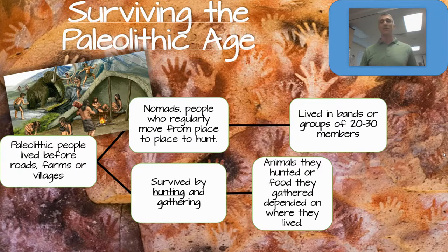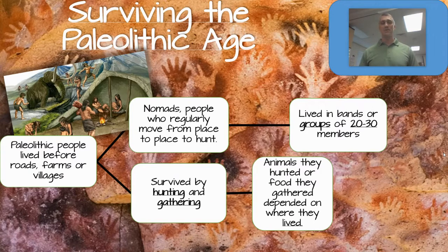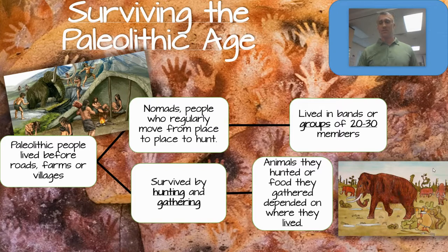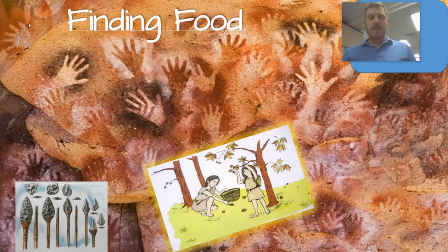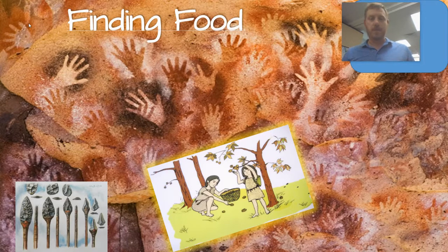The nomads are always on the move in a constant pursuit of food. You can see in the picture an example of Paleolithic age people trying to stalk and hunt a woolly mammoth. The nomadic tribes spent a majority of their time in a constant pursuit of food, whether it was hunting animals or gathering fruits and nuts that grew on trees and vines where they lived.